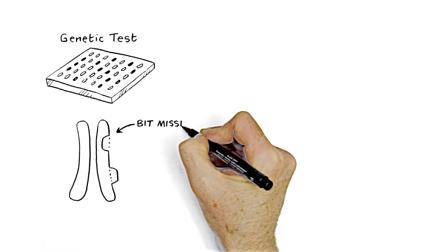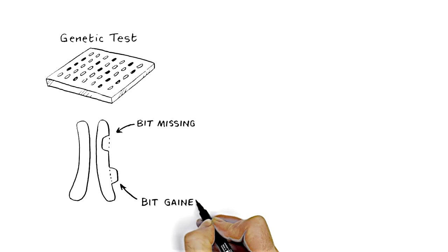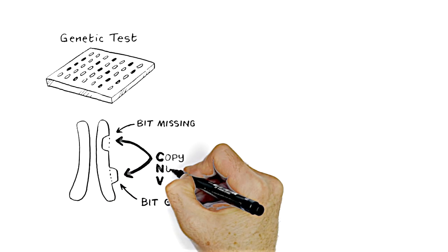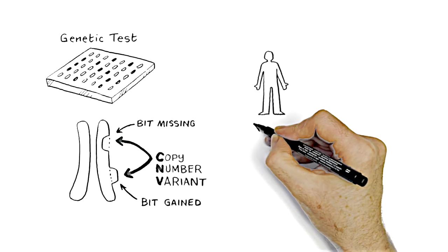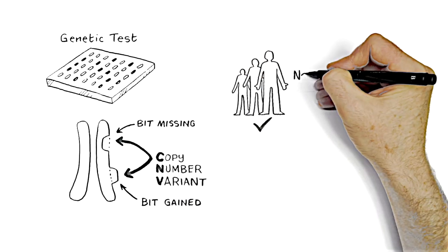Any piece of a chromosome that is missing or gained is called a copy number variant, known as a CNV. We all have CNVs, most of which are harmless. They are part of the natural process of evolution.